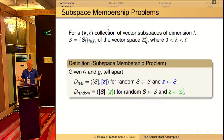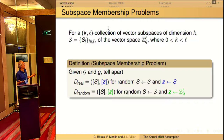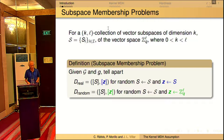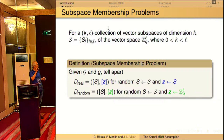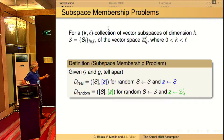We start with a family of vector subspaces of fixed dimension K in a vector space of dimension L. Then in this family, we can pick just one of these subspaces at random.